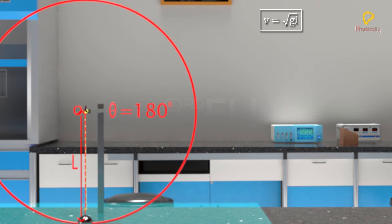Applying the law of conservation of mechanical energy at the lowest and highest points, that is, kinetic energy of bob at the lowest point, half Mv not square, is equal to sum of its potential energy, Mg2L, and kinetic energy, half Mv square at the highest point.